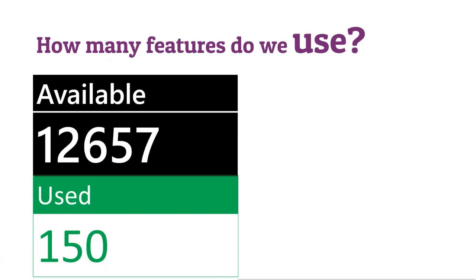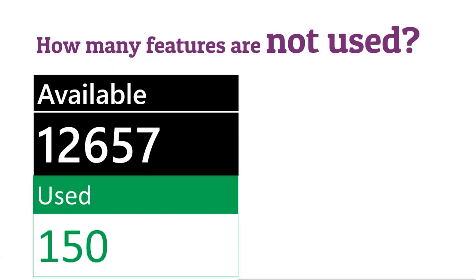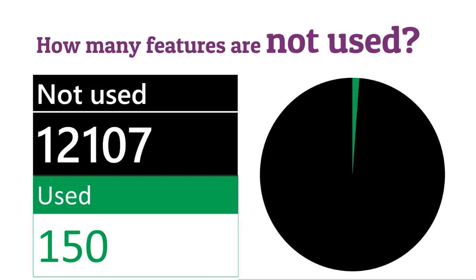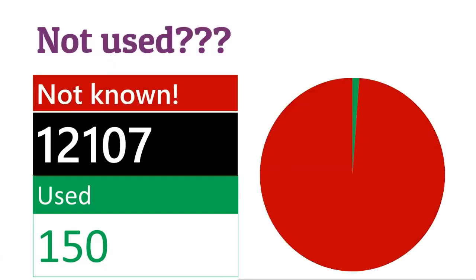Obviously Microsoft is getting telemetry from every desktop for the last 30 years. They know exactly which features are being used. They don't know who is using them because the data is anonymized, but they know the volume. Now the question is: why are we not using these features? The answer is they are not really unused — they are not known. As developers, we start with a blank canvas and create features. With Office it's different: when you start an application, there are already thousands of features, and you have to figure out how to use them.